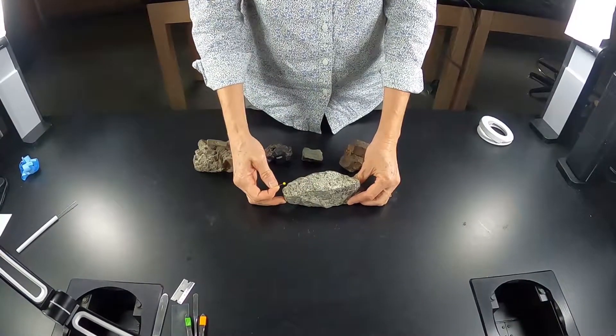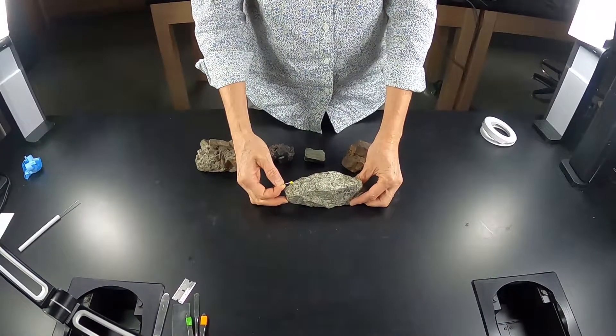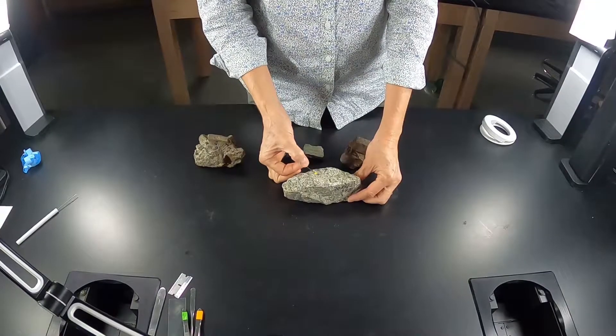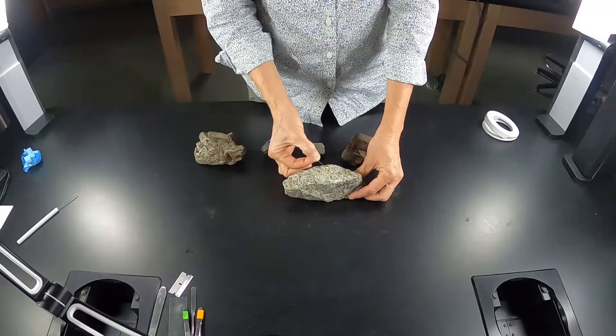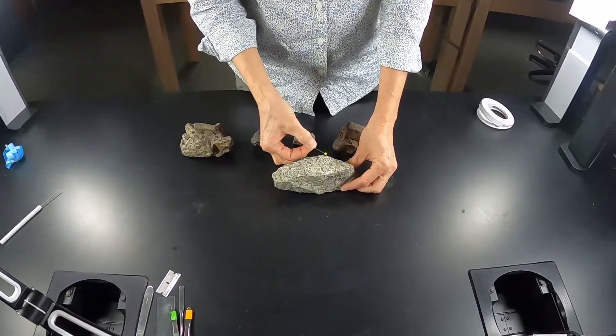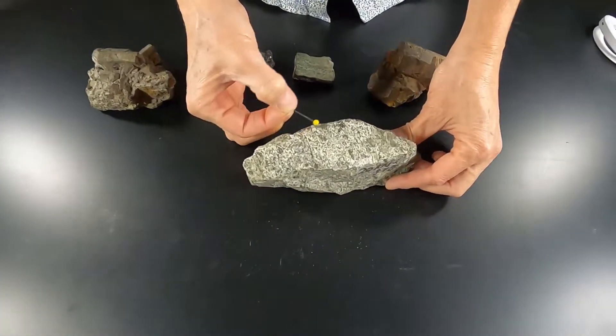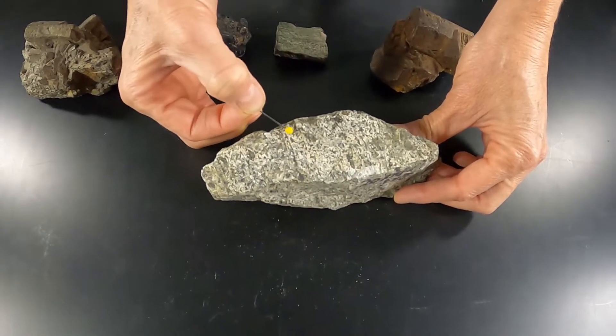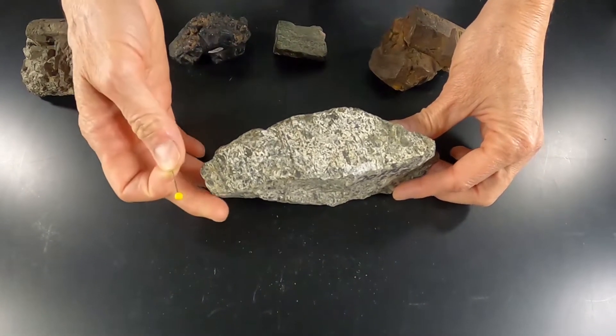All right, we're going to be looking at rocks from the Stillwater Complex that look a lot like this one. Notice how chalky white we see this surface is, which can be really useful for seeing a particular texture in this rock.